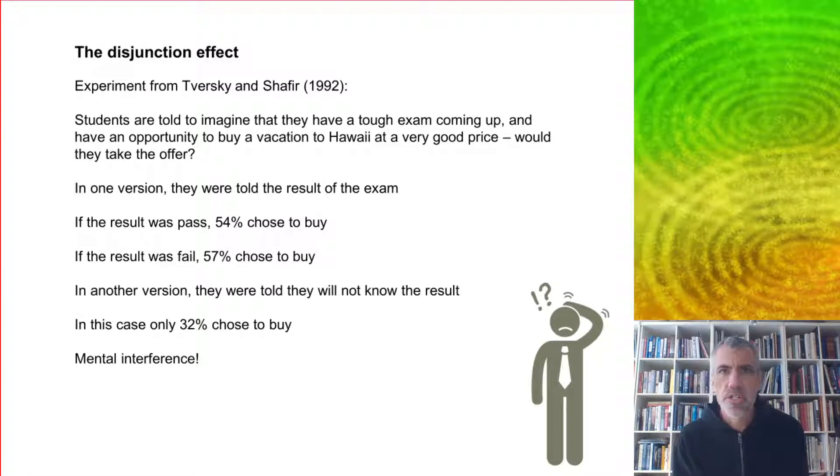In one version of the test, they were told the result of the exam. If the result was passed, 54% chose to buy. If the result was fail, 57% chose to buy. So in each case, more than half.